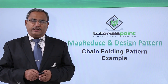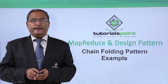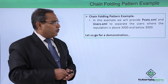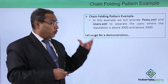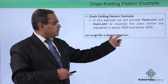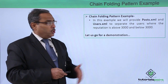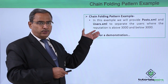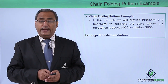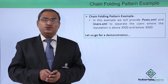In this video, we are going to discuss a chain folding pattern example. We shall go for one practical implementation of this concept. We will provide posts.xml and also users.xml. These two XML files will be used to separate the users where the reputation is above 3000 and below 3000. This is the assignment we are going to implement in our next demonstration using Java coding, and how to run it and get the output will also be shown.